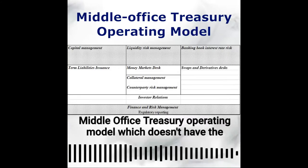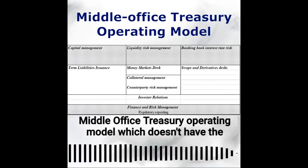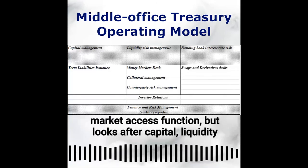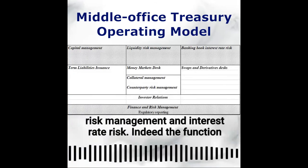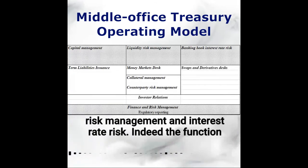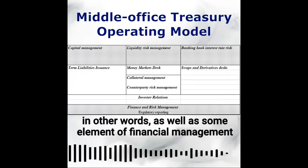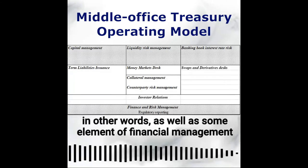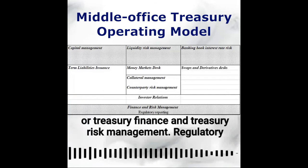Another example is the middle office treasury operating model, which doesn't have the market access function, but looks after capital, liquidity risk management, and interest rate risk — including the ALM function — as well as some element of financial management, treasury finance, and treasury management.